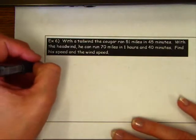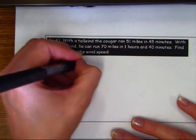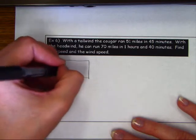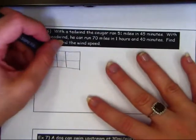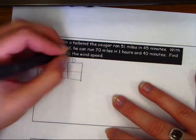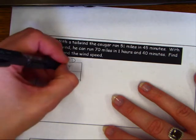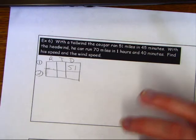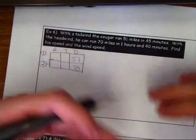Make your little box with equation one and equation two. We're making the box small because this problem is kind of big. We do rate times time equals distance. The distance for the first equation is 51 miles and for the second equation the distance is 70 miles.